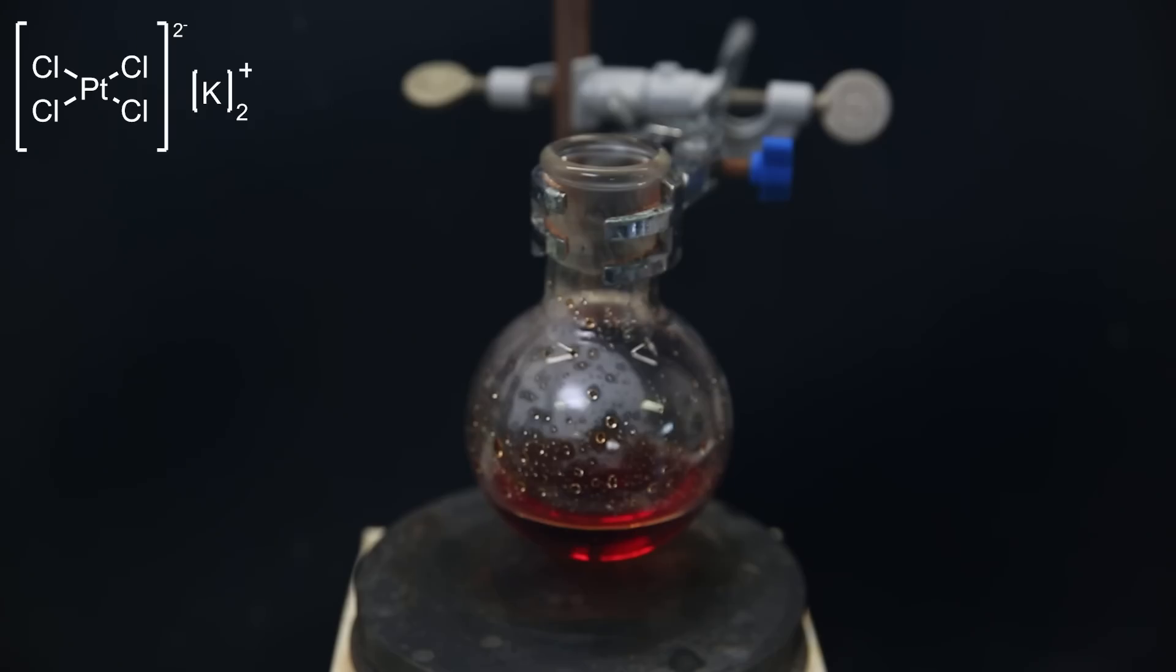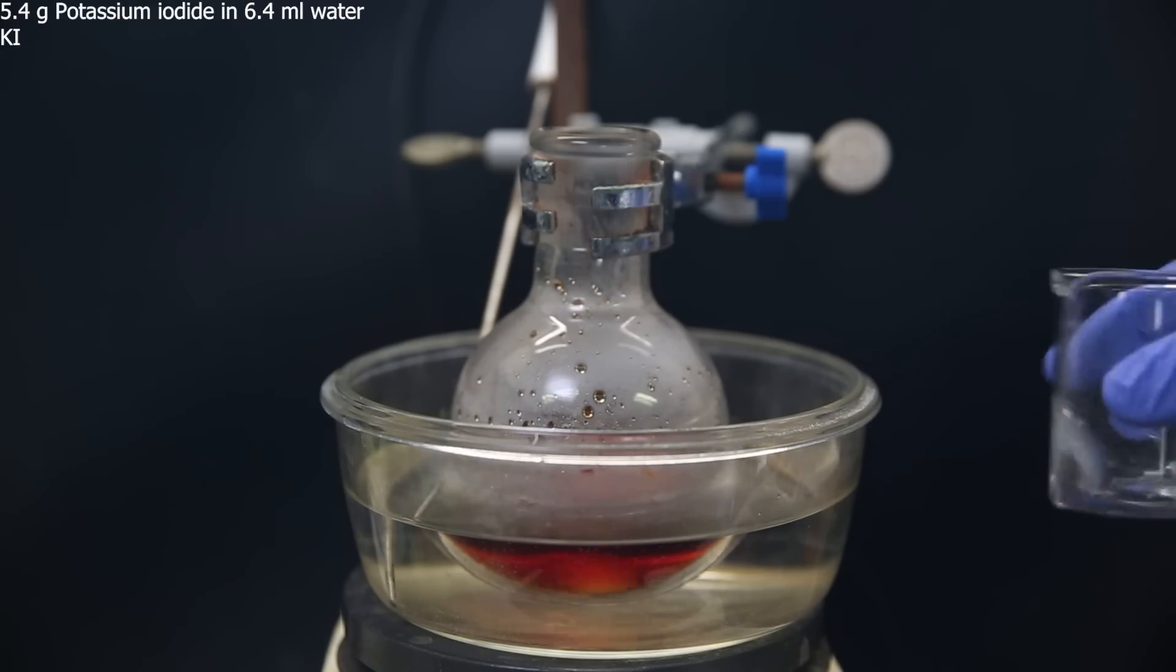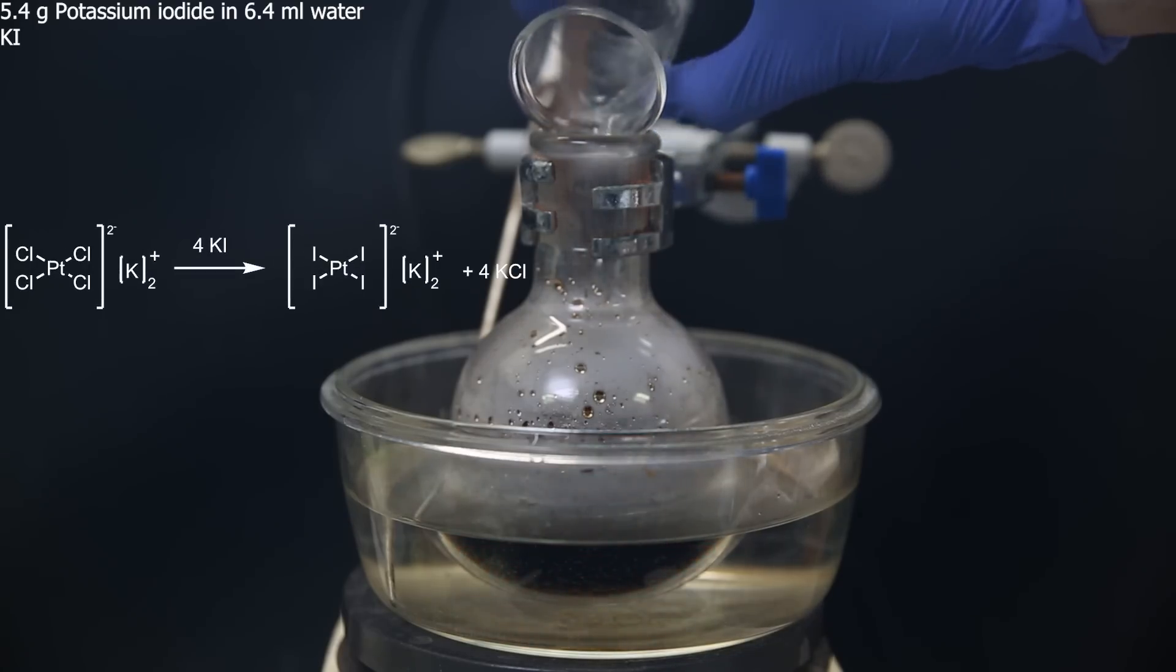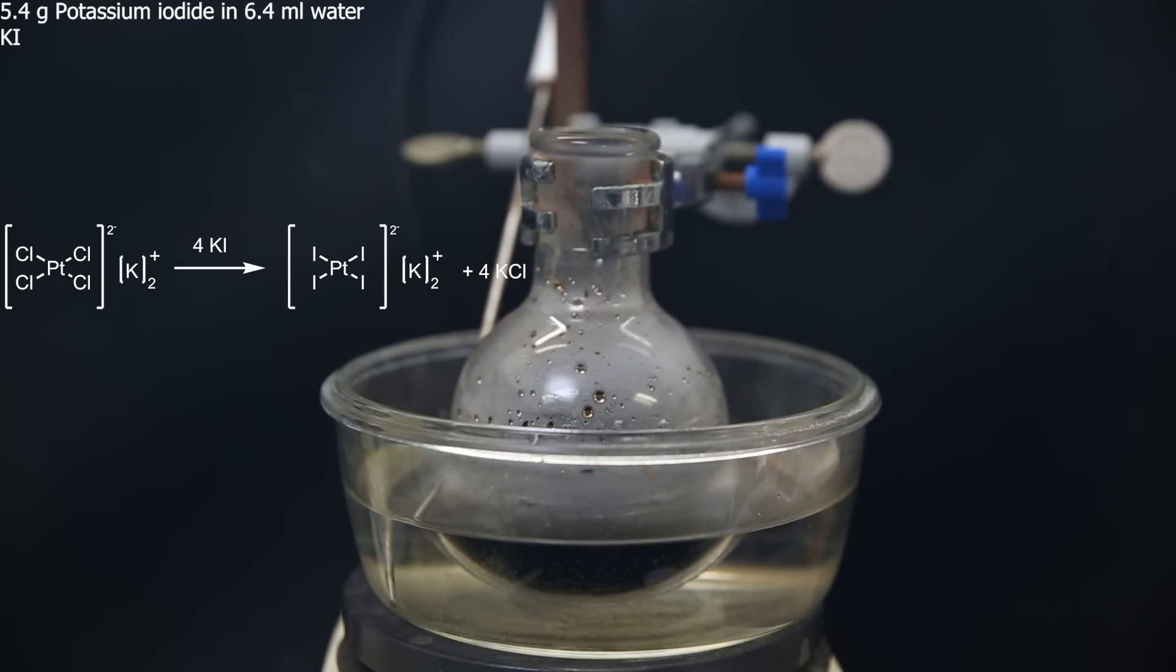Now for the next reaction, I set this flask in a water bath and heat it to 40C. I add a solution of 5.4 grams of potassium iodide in 6.4 mils of water. It immediately replaces all of the chlorines with iodines, and it turns black from the formation of the tetraiodoplatinate ion.